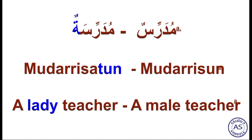Mudarrisun — a male teacher. And Mudarrisatun — a lady teacher. इसमें भी जो last letter seen है, उसका vowel sign change कर दिया — फथा से। Mudarrisun था, लेकिन Mudarrisah हुआ, और फिर symbol of feminine add किया: Mudarrisatun। Mudarrisun: a male teacher. Mudarrisatun: a lady teacher।